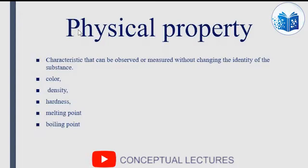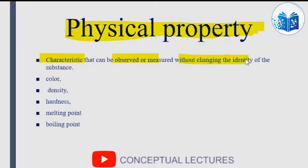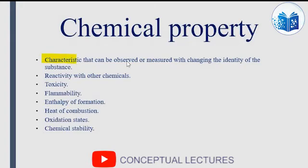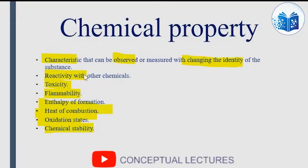In thermal analysis we study two types of changes: physical changes and chemical changes. Physical properties are those characteristics observed without changing the identity of the material — for example, color, density, hardness, melting point, and boiling point. Chemical properties are those characteristics observed with a change in identity — for example, reactivity, toxicity, flammability, enthalpy of formation, heat of combustion, oxidation, and chemical stability.